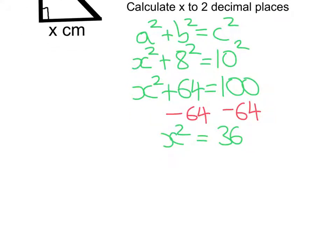So now all I've got to do is get rid of the square. If you remember, to get rid of a square, you need to square root both sides. So I'm going to square root the x squared and the 36. So x squared square root is x, square root of 36 is 6.